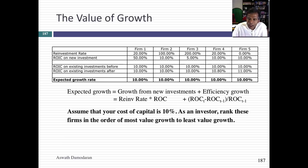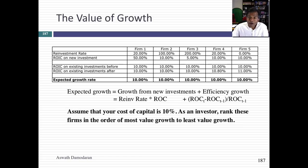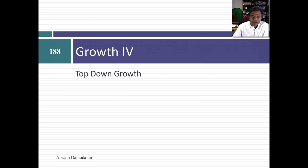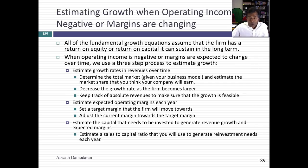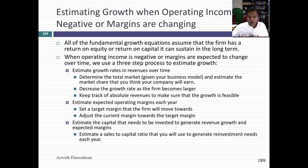Try this out on a sector. Take companies all of which have high growth and rank the growth rates based on where the growth comes from — whether from great new investments, improving existing investments, or from investments that earn less than the cost of capital. Not all growth is created equal. When a company's margins are changing — which is the case for about 80% of companies — you cannot start with operating income. You've got to start with revenues; it's called a top-down estimate.